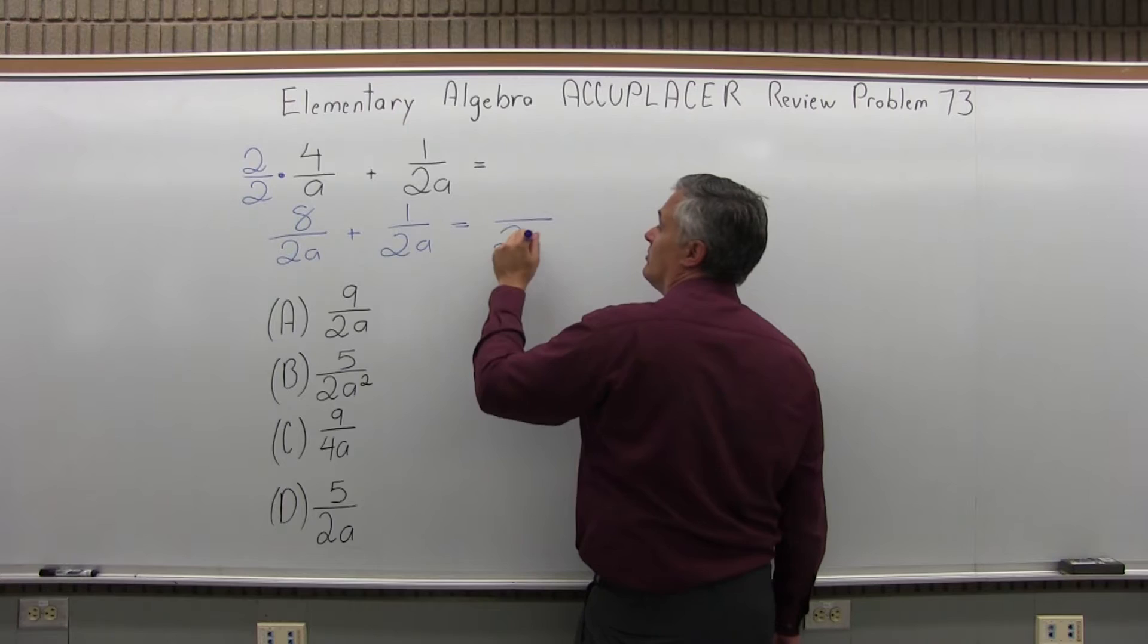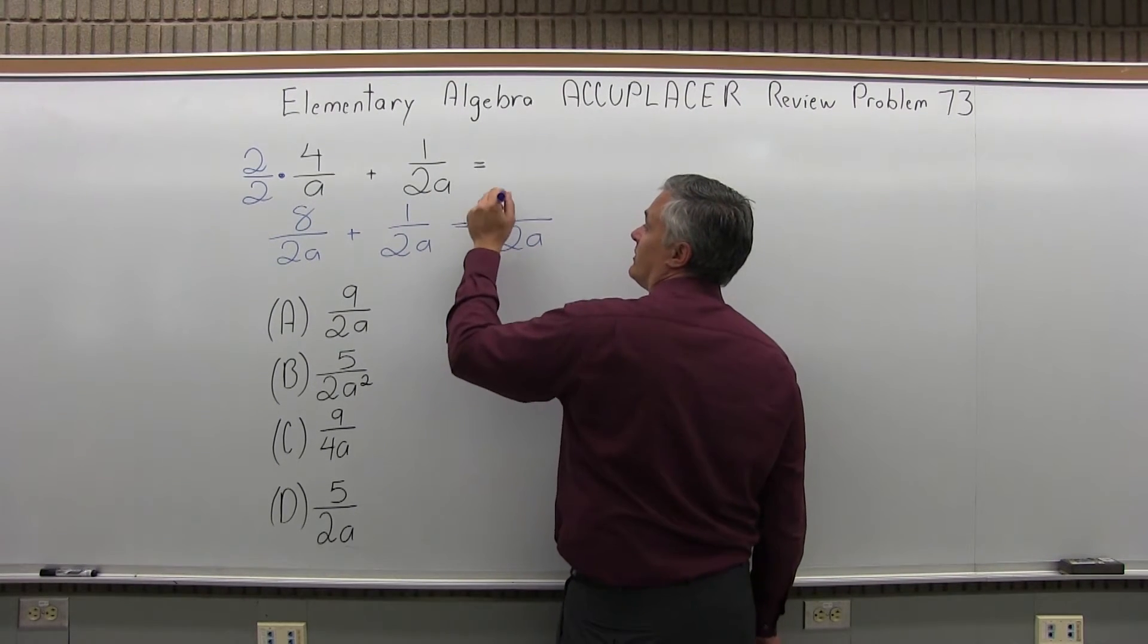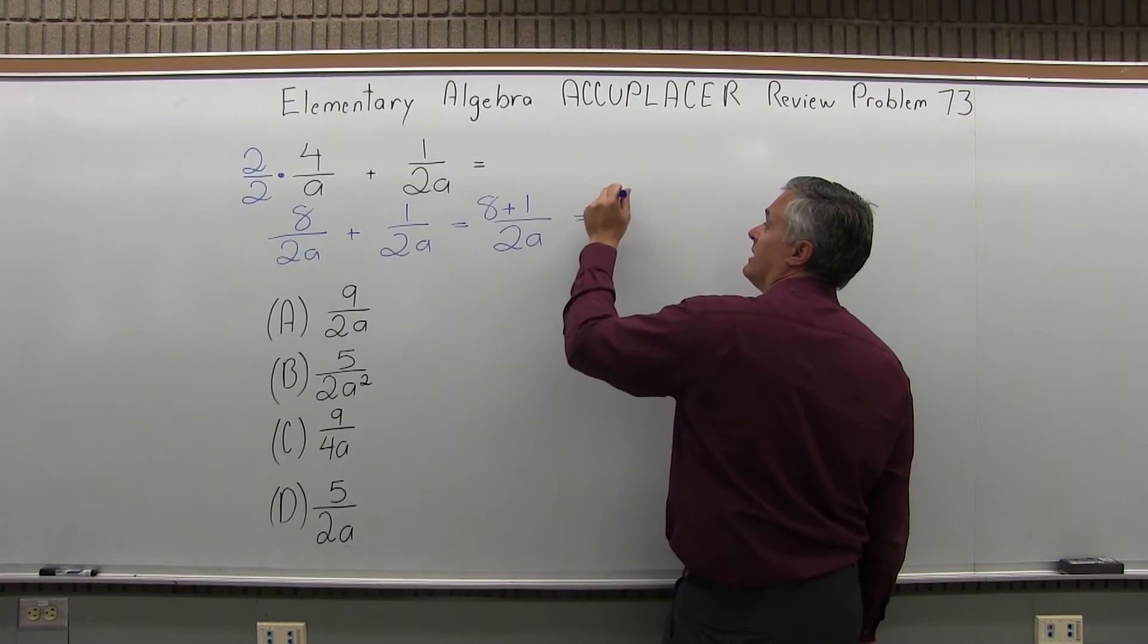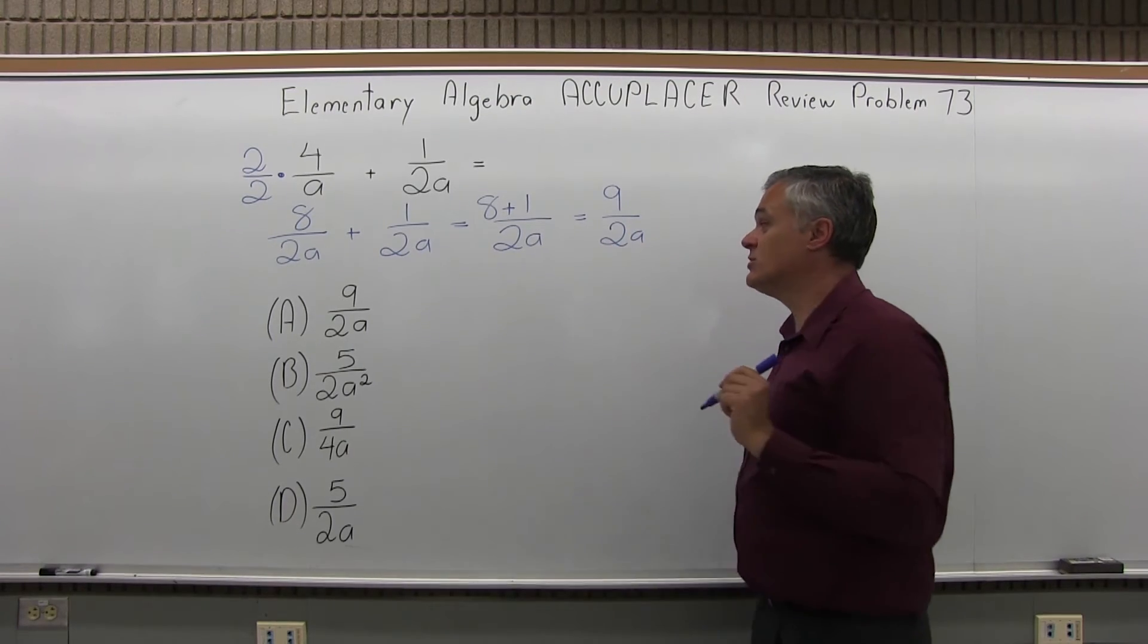I can combine the numerators. The common denominator is 2A. I have 8 from the first fraction plus 1 from the second fraction, and 8 plus 1 can be simplified to 9. That's in the numerator and the denominator is 2A.